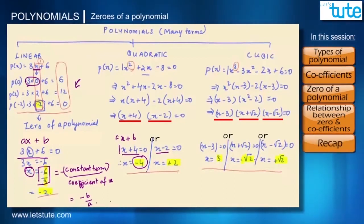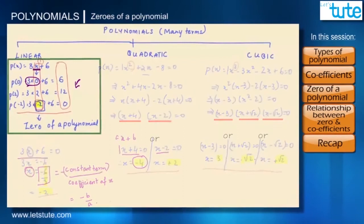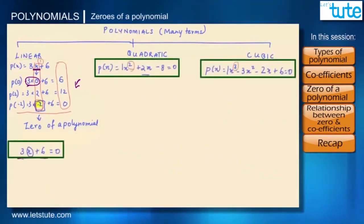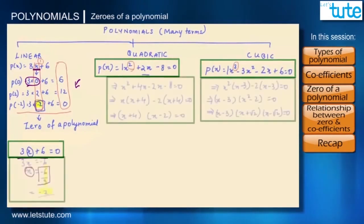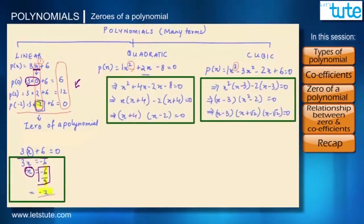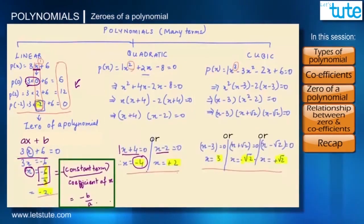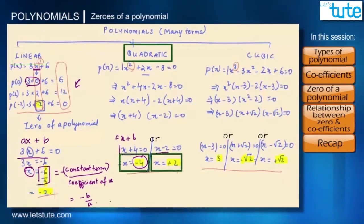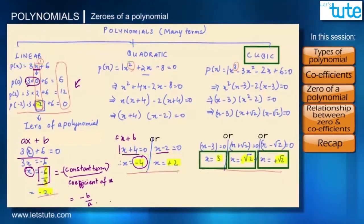Let's have a quick recap of what we've studied so far. We know what the zero of a polynomial is and how to find it by equating the polynomial with zero and then factorizing it. We saw the relation between zeros and coefficients of a linear polynomial: −b/a. We also saw that a linear polynomial can have only one zero, a quadratic can have a maximum of two zeros, and a cubic can have a maximum of three zeros.